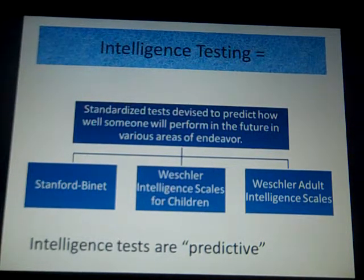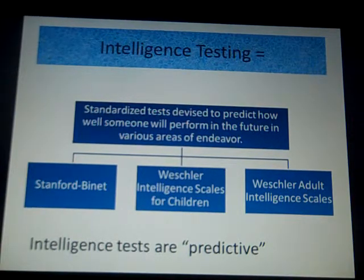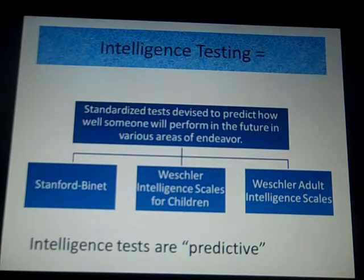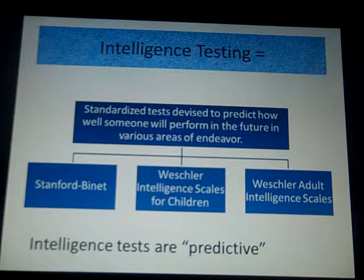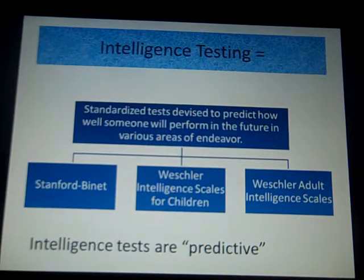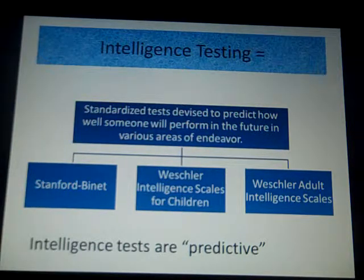We do have various tests of intelligence that your book talks about. The key thing to remember about intelligence tests is that they are predictive — they are standardized tests devised to predict how well someone will be able to perform in the future. Examples include the Stanford-Binet and the Wechsler Intelligence Scales for Children, which are also referenced in your textbook.